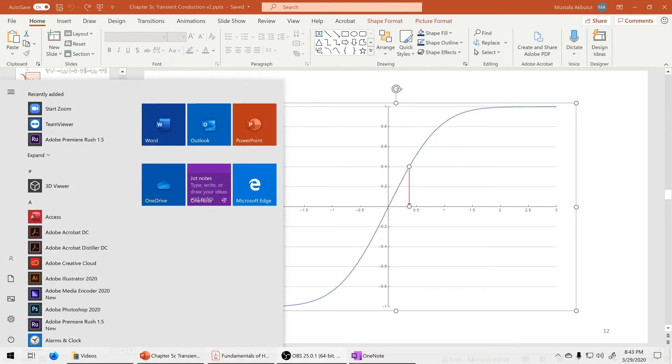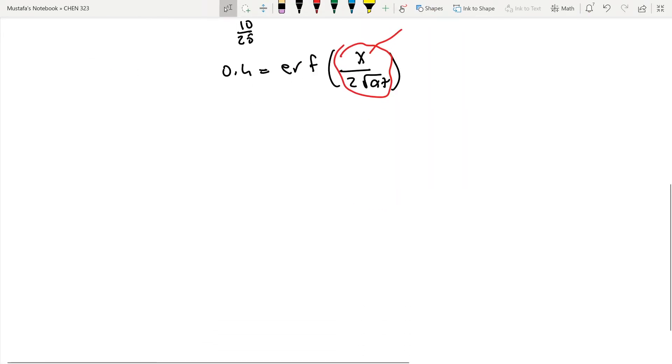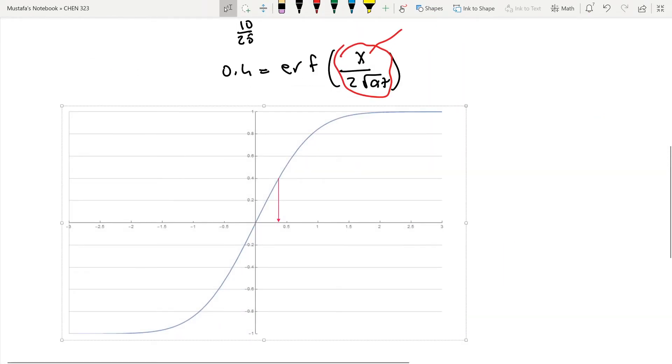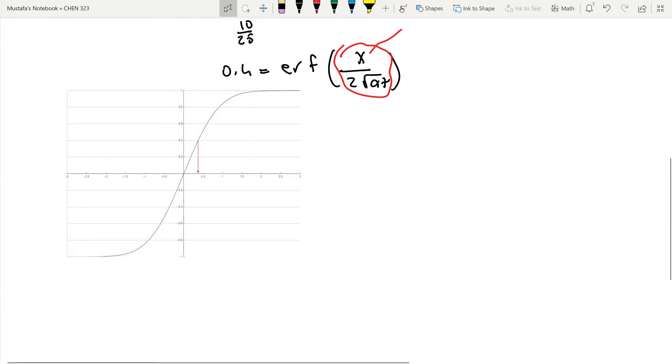And what is the inverse error function that's going to give me 0.4? So I'm going to read this graph. What is the value inside the error function that's going to give me 0.4? I need to read the X value that corresponds to 0.4, and that's basically inside this error function. So the inside error function is 0.37.